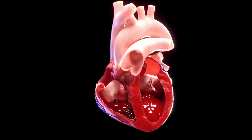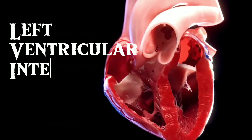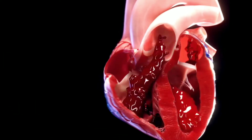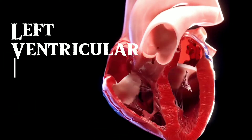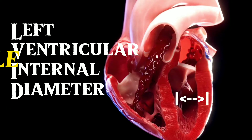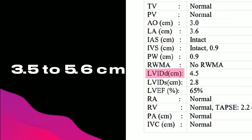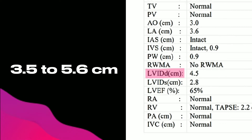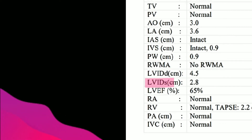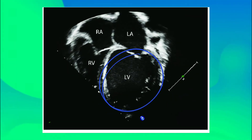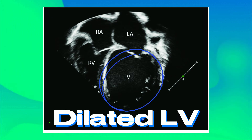Next are LVIDD and LVIDS. LVIDD means left ventricular internal diameter in diastole, and LVIDS means left ventricular internal diameter in systole. The normal range for LVIDD is 3.5 to 5.6 cm, and the normal range for LVIDS is 2.0 to 4.0 cm. An increase in the size of these measurements is called dilated left ventricle.